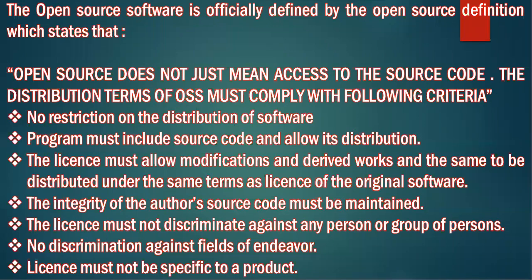For example, I give you the HTML coding and say you can modify it, make changes. But if I restrict you — that whatever code I gave you, just stick to that, you have no permission to change it — that is a restriction. The license must allow modifications and derived works, and the same must be distributed under the same terms as the license of the original software. Terms applied on the original — same terms should be applied on the copied version also.